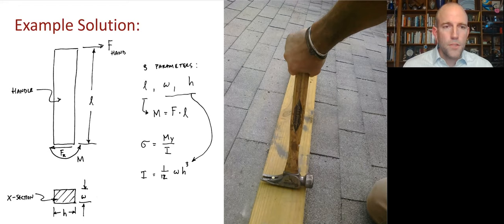And that gives us three parameters, the length of the hammer, the width, and the height. And that length will come in to give us the moment about that end of the handle. And the width and height will be used to calculate the area moment of inertia of this cross section down here. And we bring those two things together, we can get an estimate of the stress due to bending.